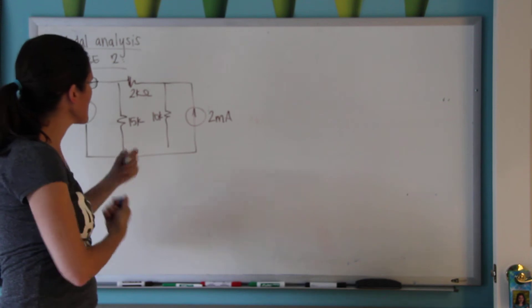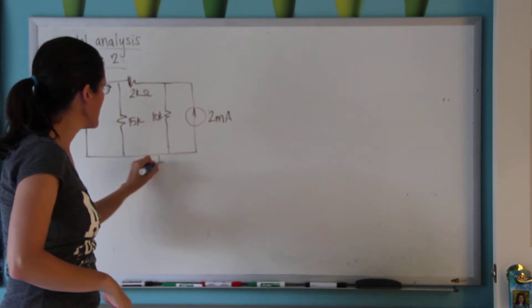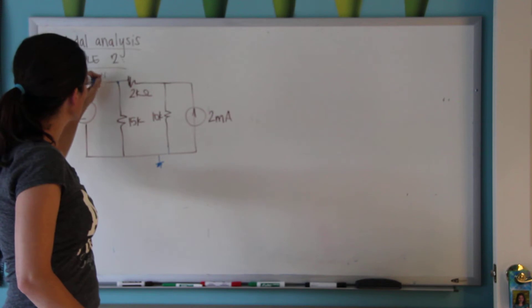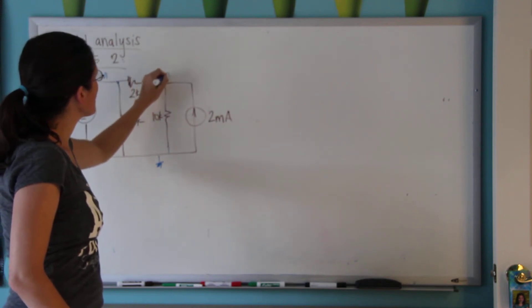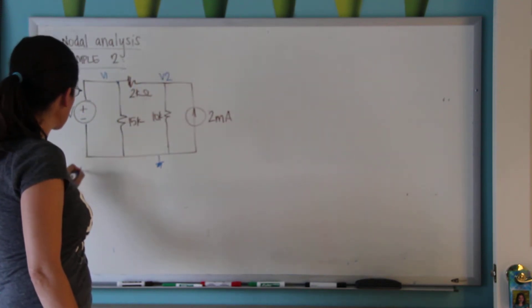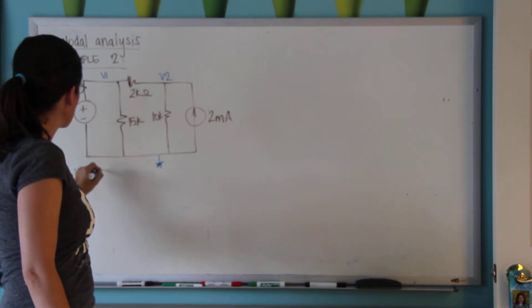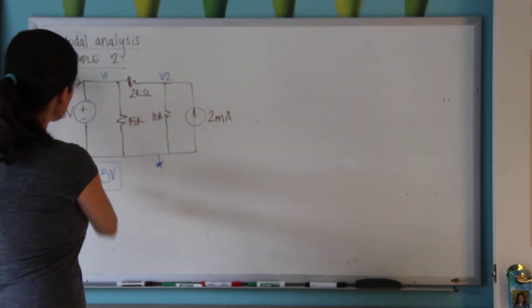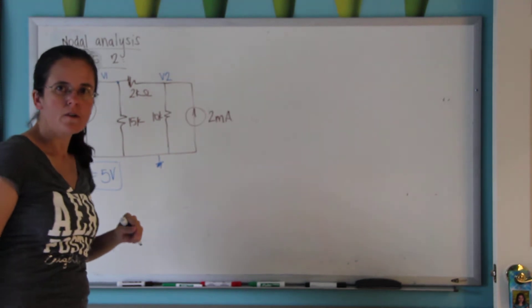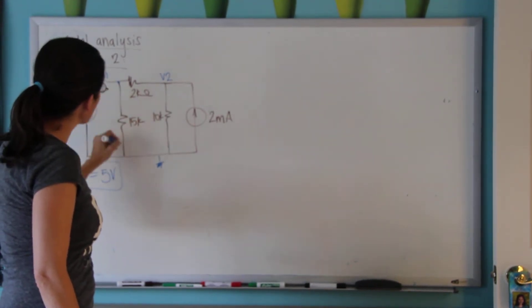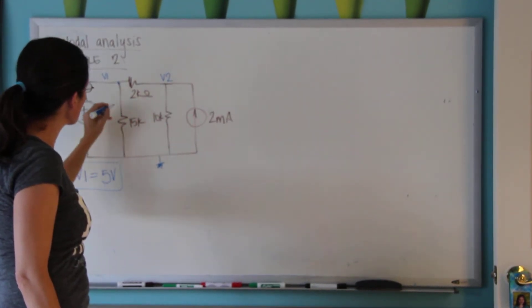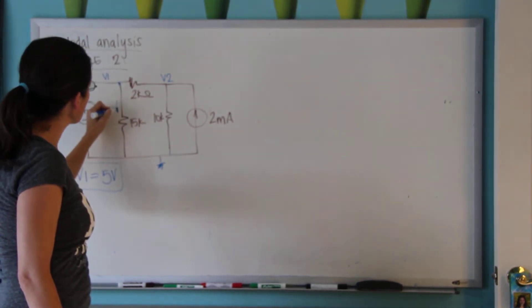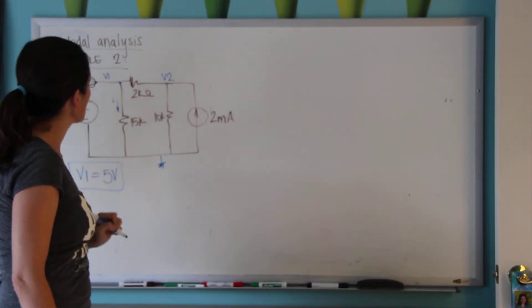I'm going to put my reference node here. I'm going to write V1 and V2, but I have for free that V1 is 5 volts, because these two elements are in parallel. So we know that the voltage on the 15 kΩ resistor is 5 volts. Furthermore, I know the current on the 15 kΩ.